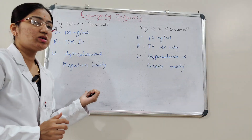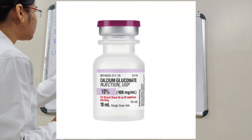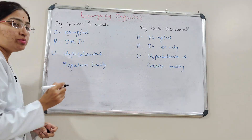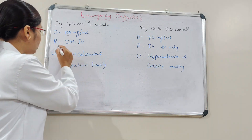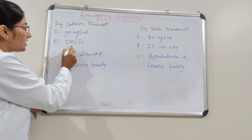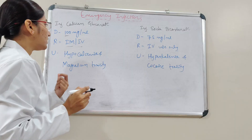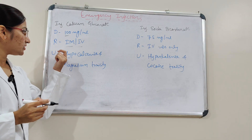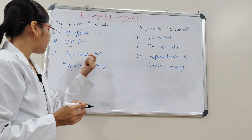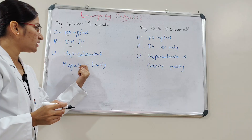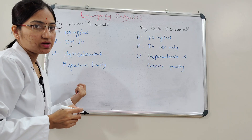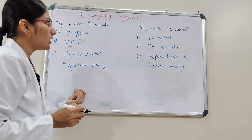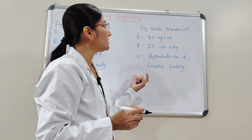The fifth injection is Calcium Gluconate. The dose is 100 mg per ml, routes are intravenous infusion, intramuscular, and intravenous. It is used to treat hypocalcemia and magnesium toxicity.